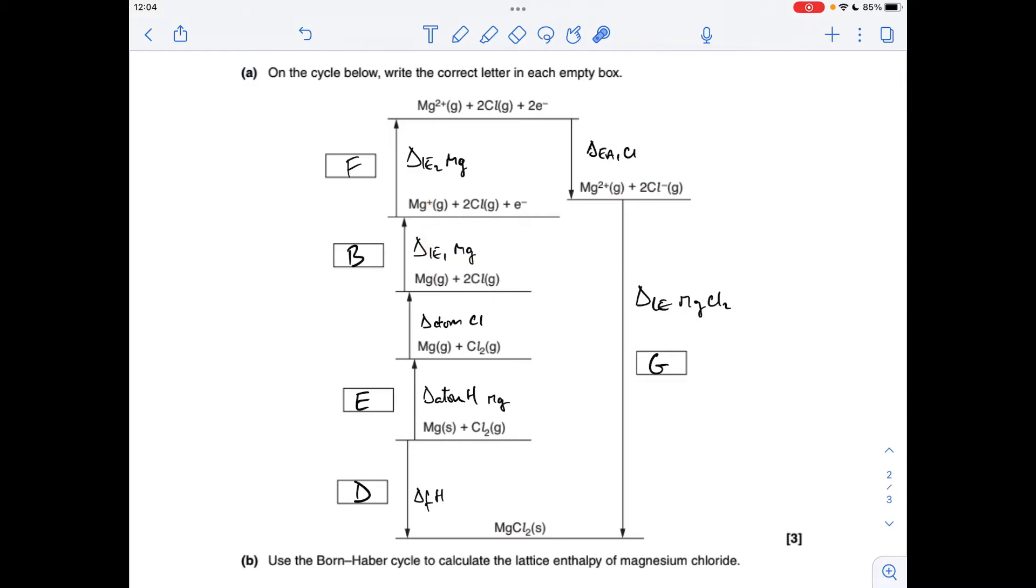First ionisation energy of magnesium, process B. Second ionisation energy of magnesium, process F. We've got the electron affinity of chlorine here, but again we're going to need to double this in the calculation, because we've got two moles of chlorine in the cycle.